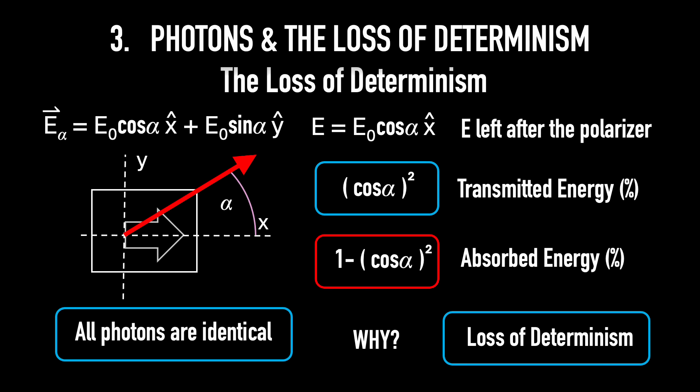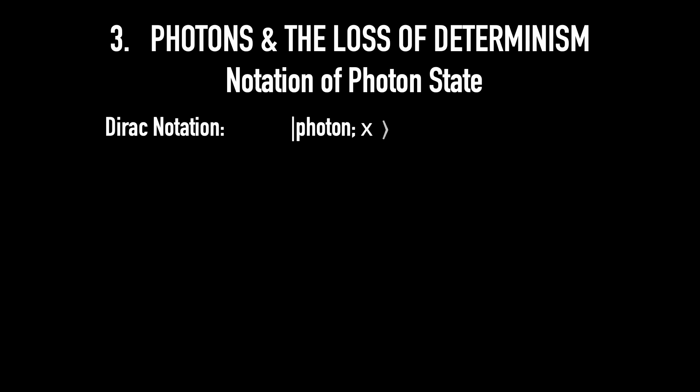Notation of photon states. In 1939, Dirac invented a notation to describe a photon polarized in the x-direction: photon colon x. This notation represents a vector of a possible state of a photon polarized along the x-direction. Similarly, this notation describes a photon polarized in the y-direction. And linearity means that there can exist a state called cos alpha photon x plus sin alpha photon y. And this is the photon state polarized in the alpha direction.